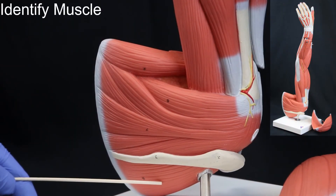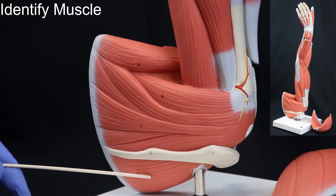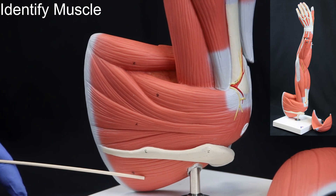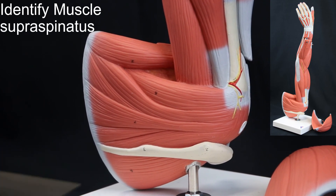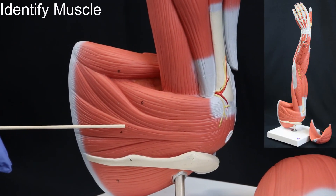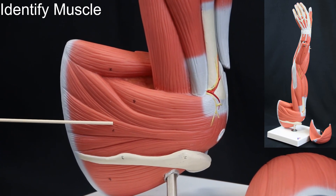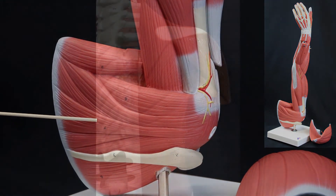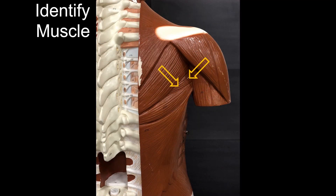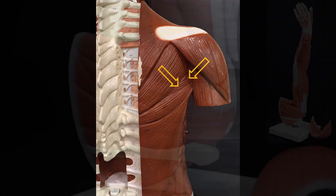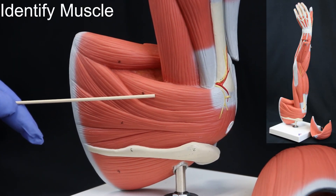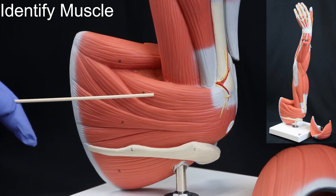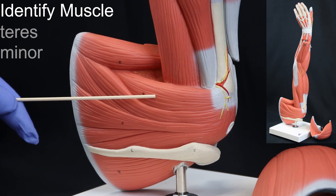I.D. muscle: supraspinatus. I.D. muscle: infraspinatus. I.D. muscle: teres minor. I.D. muscle: teres minor.